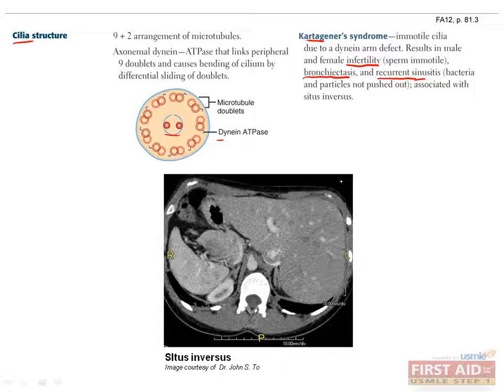Lastly, it's associated with situs inversus, which is a condition in which the major organs are found on the opposite side of the body. For example, the liver should be found on the right side, but here it's found on the left.